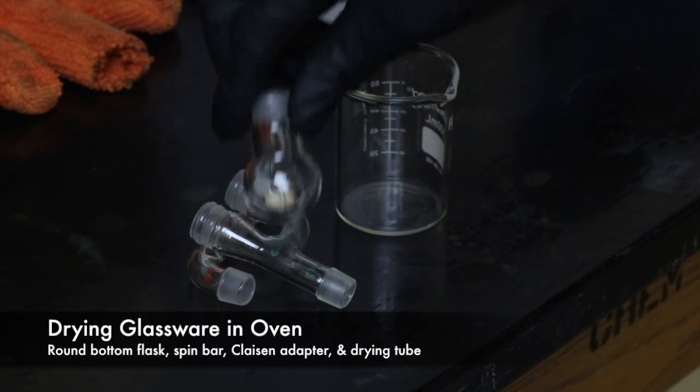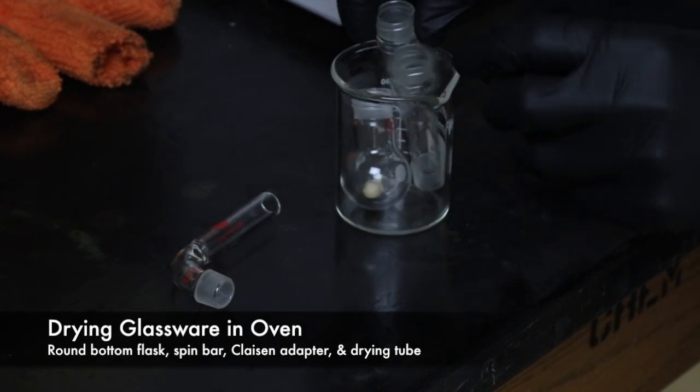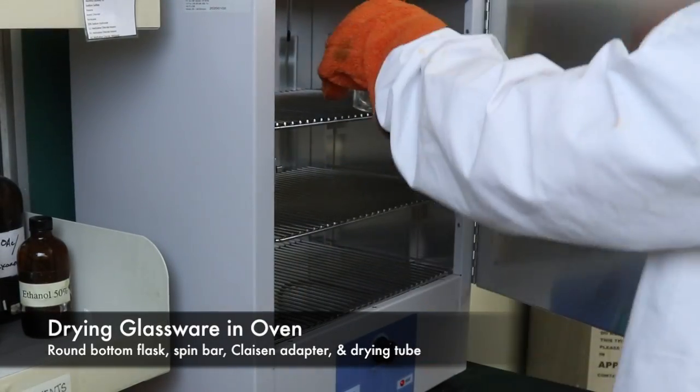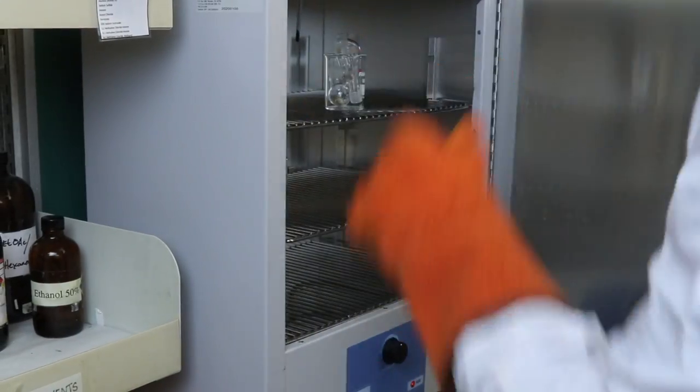I'll start by drying all of the glassware in the oven. So this will include the round bottom flask, the spin bar, Claisen adapter, and the drying tube. And I'll leave it in there for about 15 minutes.